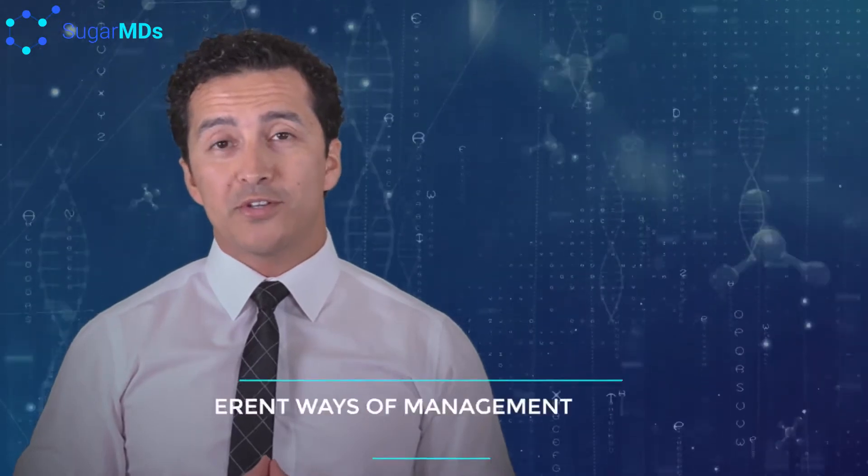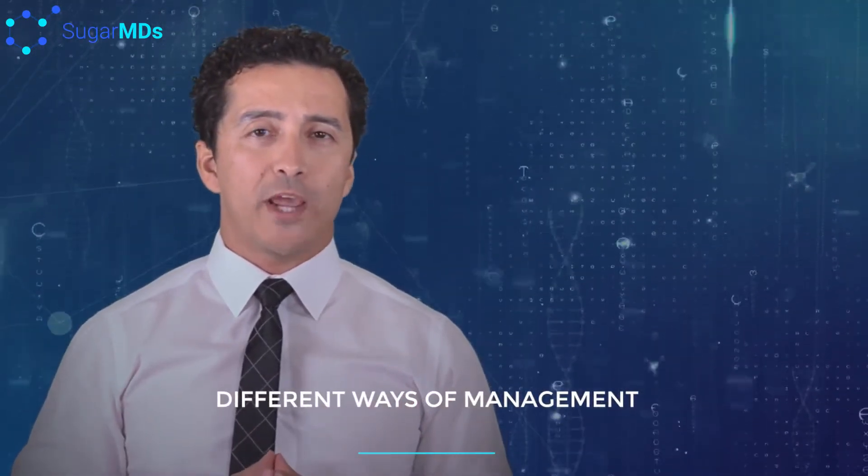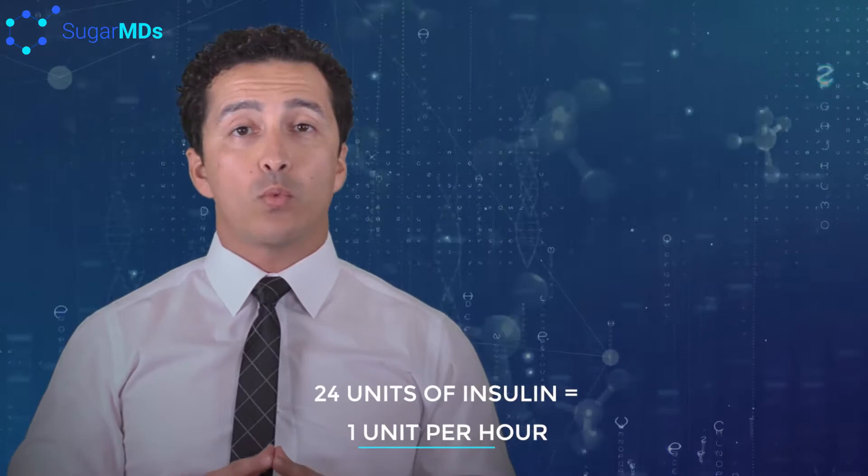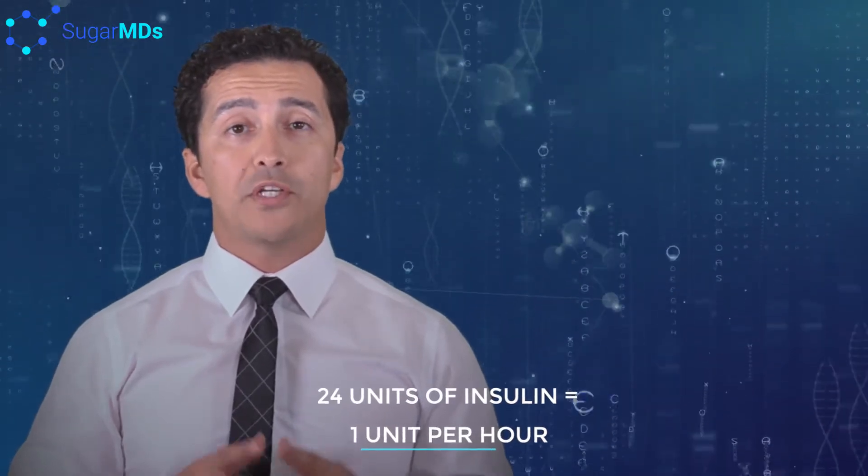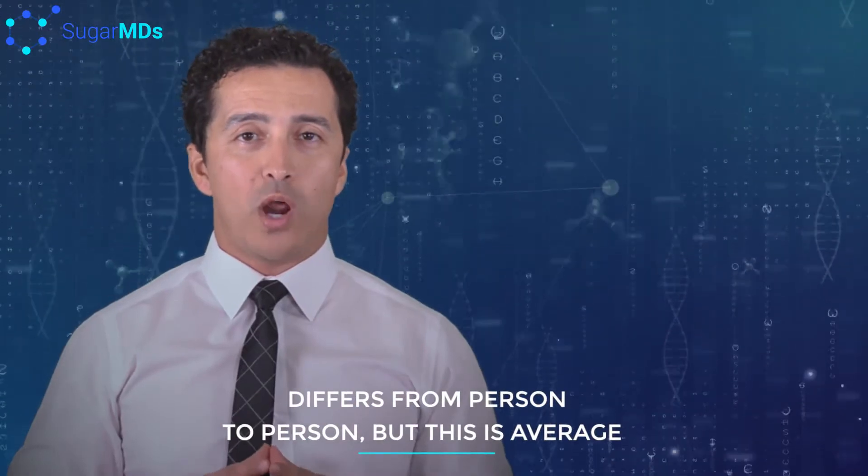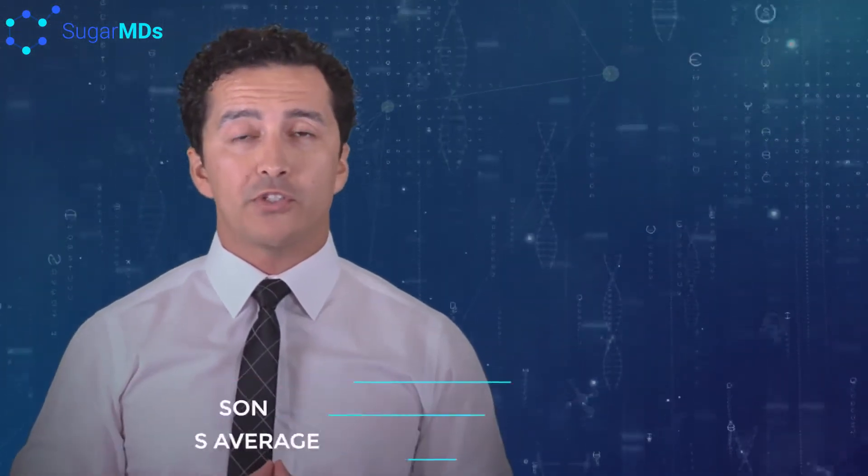These can also be manageable in different ways. If your doctor gives you 24 units of insulin, that means you are getting one unit of insulin per hour in your body. Why? Because Lantus is released over 24 hours. That one unit of insulin per hour is pretty average.